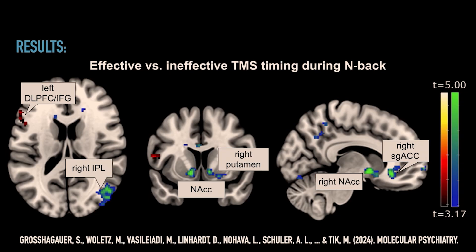Looking at the contrast between effective and ineffective timing on exactly the same target, as well as two-back versus zero-back, we see that differences in the timing parameter alone match with the depression treatment circuit. The left dorsolateral prefrontal cortex shows larger activation and the subgenual ACC shows larger inhibition, suggesting we can individualize treatment further by putting subjects in the right brain state right before a TMS pulse — and I think this has clinical value.